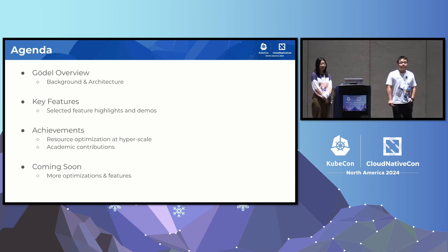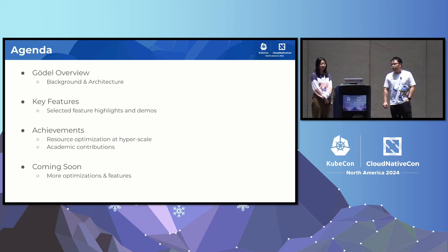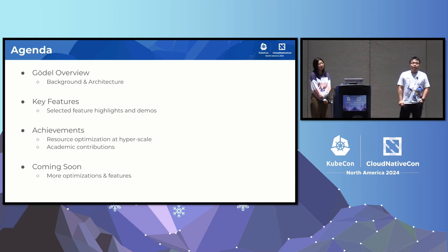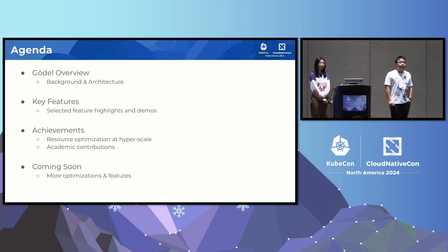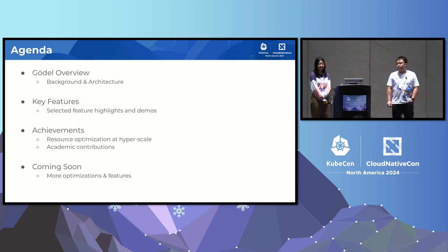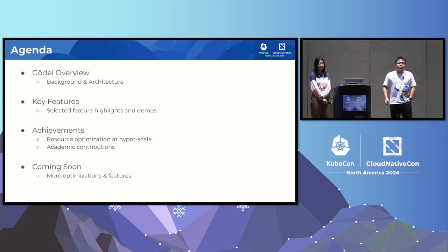Here's the agenda for today. We are going to break it down into four parts. First, we are going to take a high-level review of Godel, including some background and high-level architecture. After that, we will work through some key features we introduced in Godel along with some demos. Then we'll cover some of the achievements we have made so far in both production and academia. To wrap up, we'll cover some related future work on our roadmap.